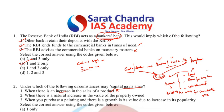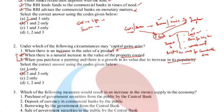When there is a natural increase in the value of property owned — you are keeping it for a while, and its value has increased — that comes under capital gains. Similarly, purchasing a painting and holding it as a valuable asset for long-term investment also comes under capital gains. So only options two and three are correct, not one. That is the answer to the second question.